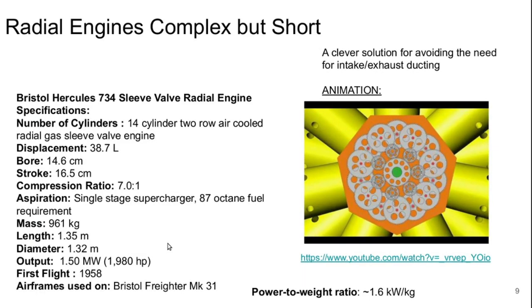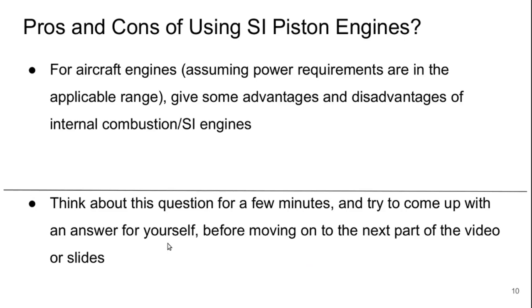Now turning to our slides — there are pros and cons of using these spark ignition piston engines. For aircraft engines, assuming the power requirements are in the applicable range, what are some of the advantages and disadvantages of using internal combustion or spark ignition engines for aerospace propulsion? I'd like you to think about this for a few minutes and try to come up with an answer for yourself before we move on to the next part of the video.